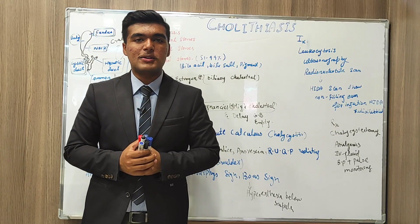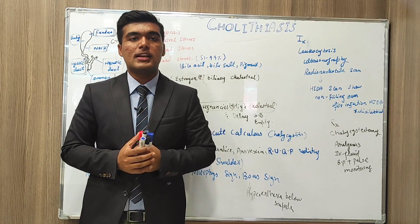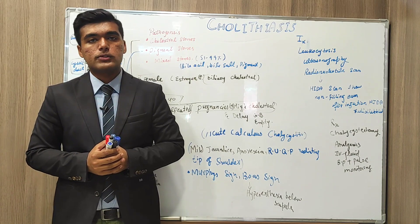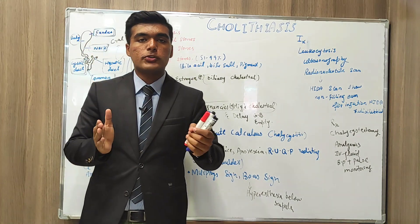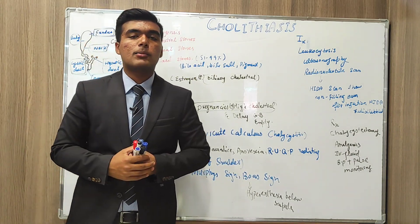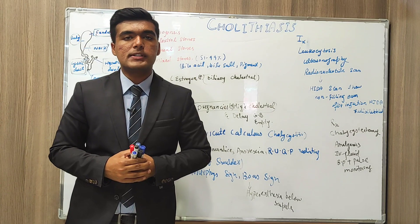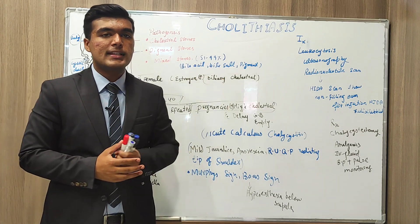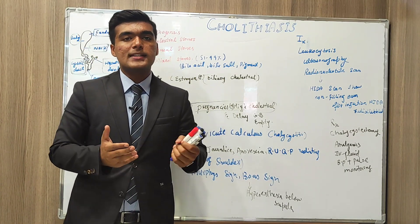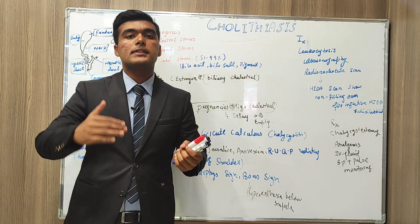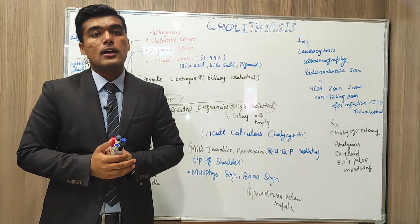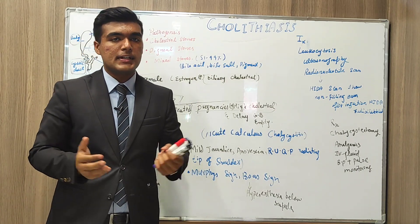Greetings everyone. I am Sri Athali from Medigo's Lecture by Sri Aat. Today we are going to talk about Cholelithiasis or gallstones, the most common biliary pathology. About 10 to 15% of the population is affected by Cholelithiasis, and in countries like Chile and Sweden, the incidence increases up to 50%, of which 80% are asymptomatic.